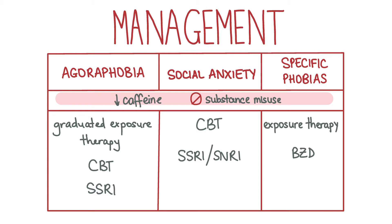Agoraphobia is also managed with CBT, graduated exposure techniques and possibly an SSRI. Social anxiety disorder is managed using CBT first line. The goal of CBT is to identify and challenge negative thoughts and to modify them. Other management options include graduated exposure therapy, psychodynamic psychotherapy and medications like SSRIs or SNRIs. Patients with phobic disorders should be referred to secondary care if they have a history of or are at risk of self-harm, suicide and/or self-neglect.